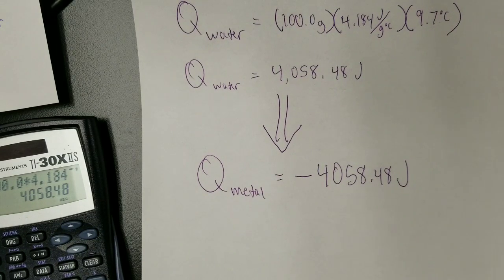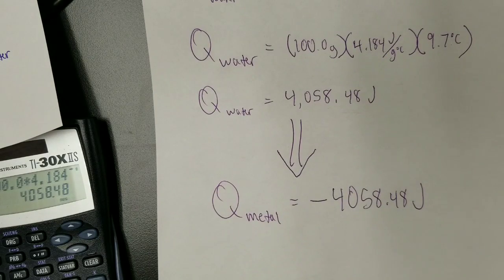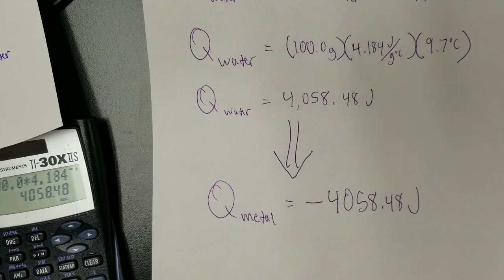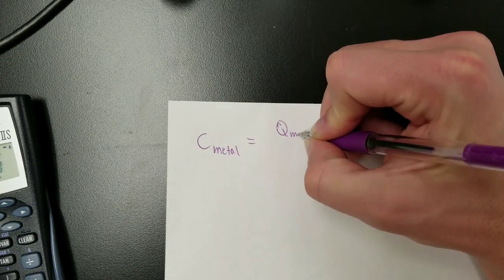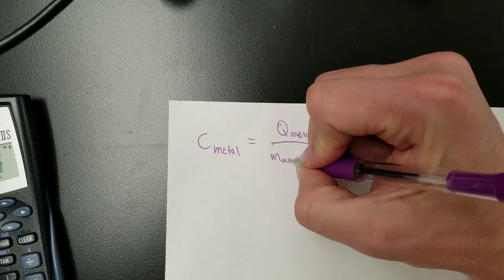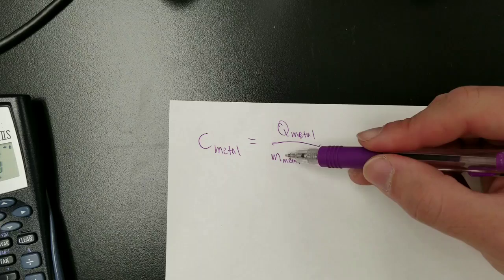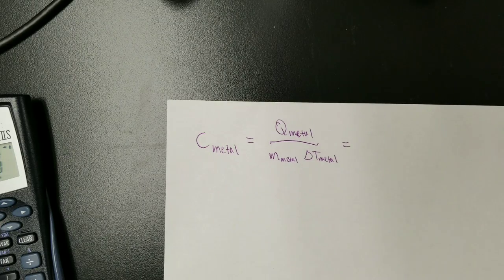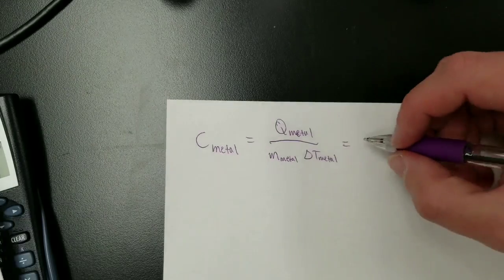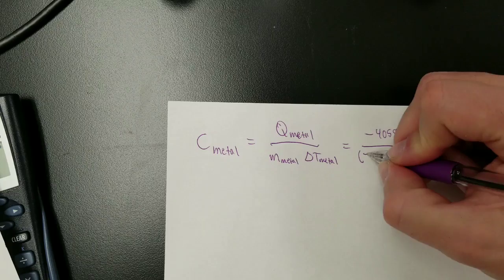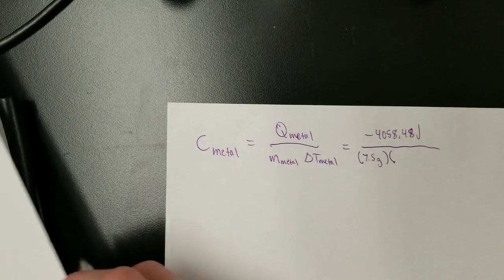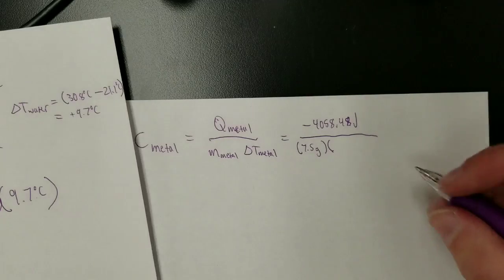This gives me what I need to finish off the calculation bit I was working on earlier. So finishing off that calculation, as a reminder, we wanted to find the specific heat of the metal. So we calculated just now, energy of the metal is that. So negative 4058.48 joules divided by, what's the mass? 7.5 grams. What's the delta T? We got that earlier. Negative 169.2 degrees Celsius.